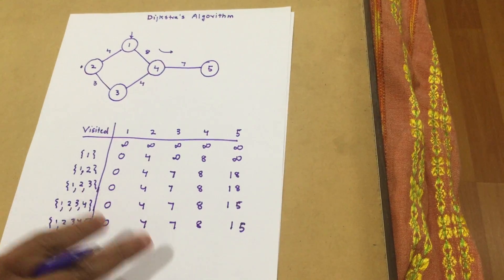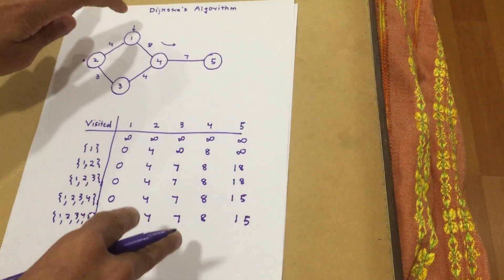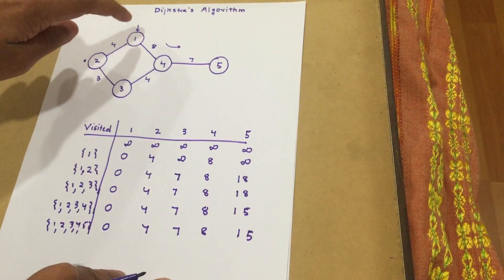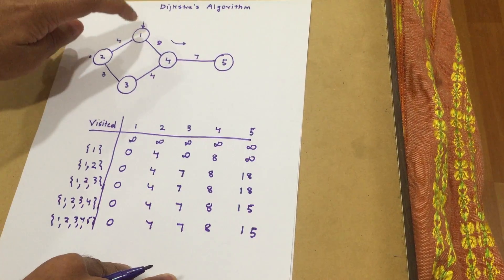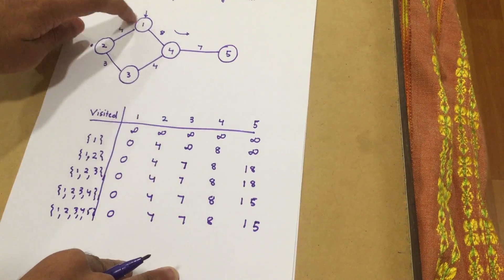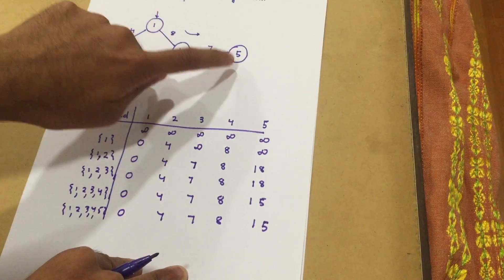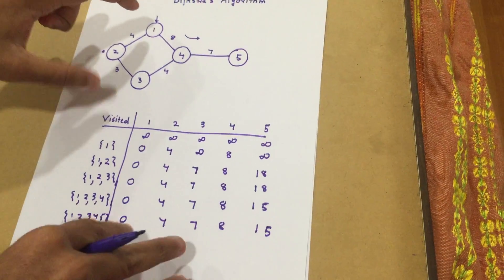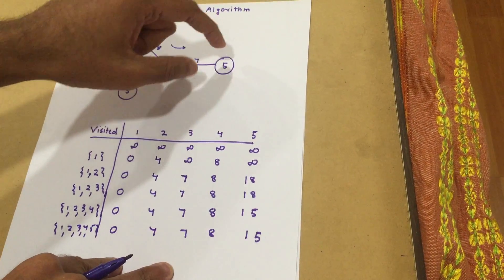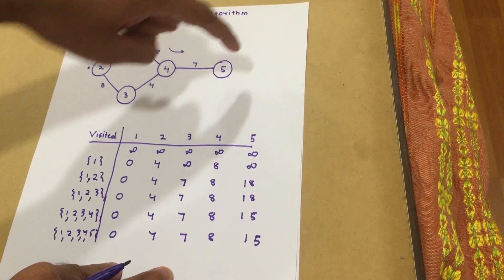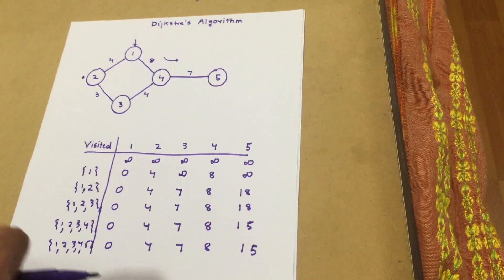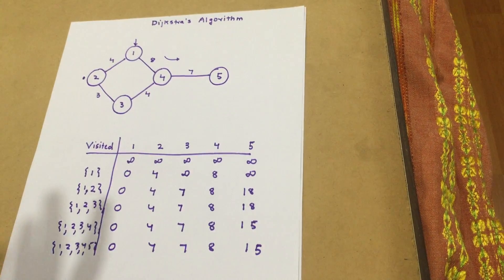Now we go to the fifth node and the distances remain the same. Using this algorithm, we have found the minimum shortest distance from root node one to every other node. The shortest distance from one to one is zero, from one to two is four, from one to three is seven, from one to four is eight, and from one to five is fifteen. So if node one is the sender and it wants to send a message to the receiver at node five, it knows the shortest path has a distance of fifteen. This is basically Dijkstra's algorithm — thank you guys.